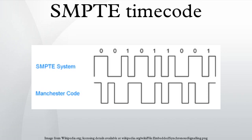SMPTE timecode is a set of cooperating standards to label individual frames of video or film with a timecode defined by the Society of Motion Picture and Television Engineers in the SMPTE 12M specification. SMPTE revised the standard in 2008, turning it into a two-part document, SMPTE 12M-1 and SMPTE 12M-2, including new explanations and clarifications.